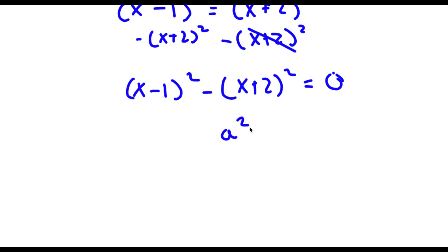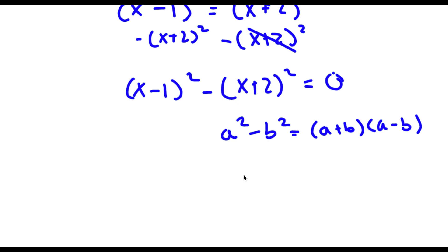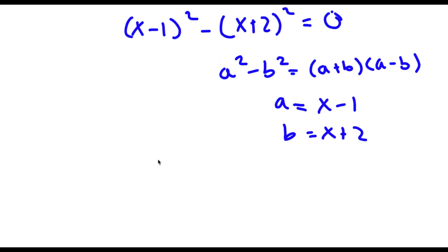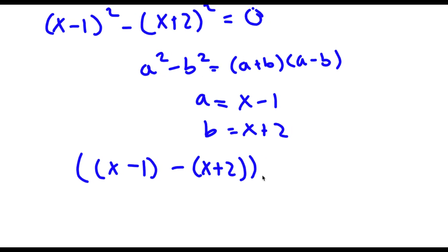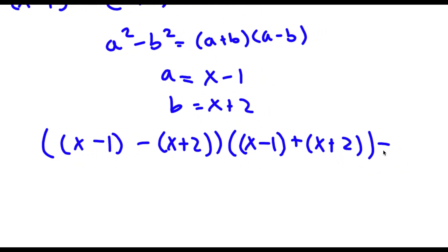Now if I have something in the form a squared minus b squared, this is the same thing as a plus b times a minus b. So in this case, a is equal to x minus 1 and b is equal to x plus 2. So now this is going to equal x minus 1 minus x plus 2, times x minus 1 plus x plus 2, and this is equal to 0.